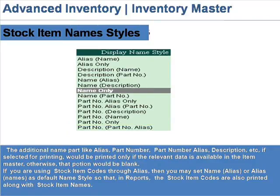The additional name part — like alias, part number, part number alias, description, etc. — if selected for printing, would be printed only if the relevant data is available in the item master; otherwise, that portion would be blank. If you are using stock item codes through alias, then you may set Name (Alias) or Alias (Name) as the default name style, so that in reports the stock item codes are also printed along with stock item names.